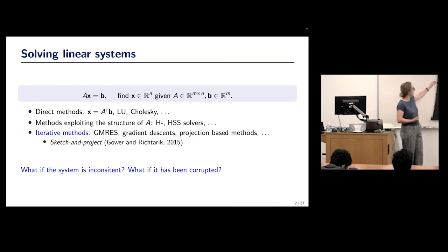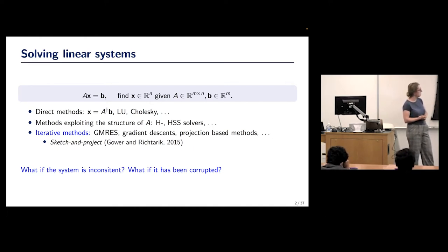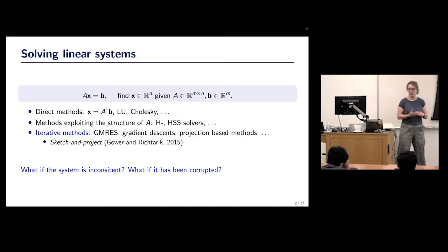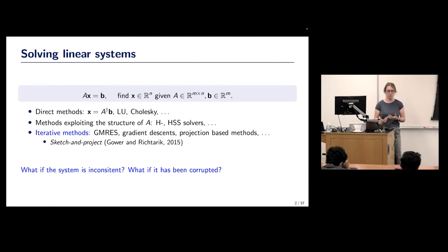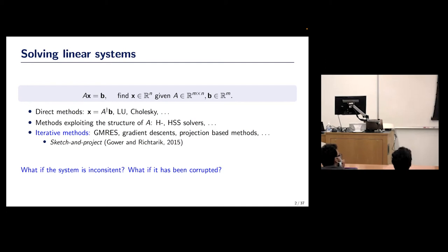This slide is about why we are not satisfied with direct methods. A couple more important questions: if your system is inconsistent, you want to do some sort of least squares. But if it is somehow otherwise corrupted, you might want something else. Just solvers won't do that — you need more information about what you're doing, and iterative schemes give the flexibility to explore.